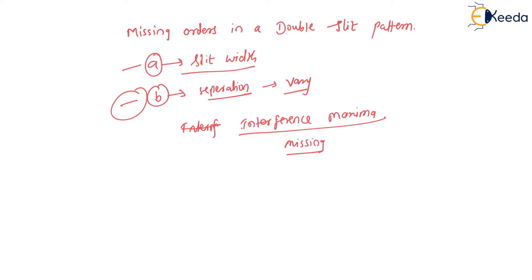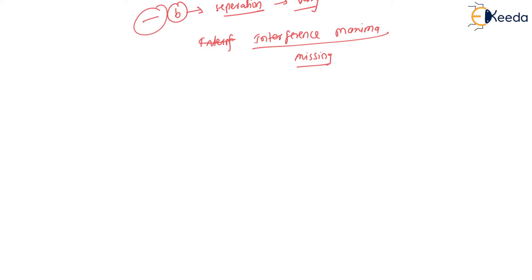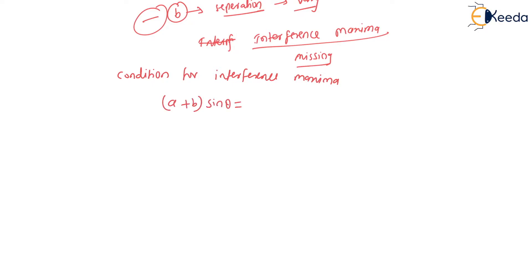To find the missing orders, we first write the equations we already know. The condition for interference maxima is: (a + b) × sin θ = nλ, where (a + b) × sin θ is the path difference, and λ is the wavelength of the monochromatic light.